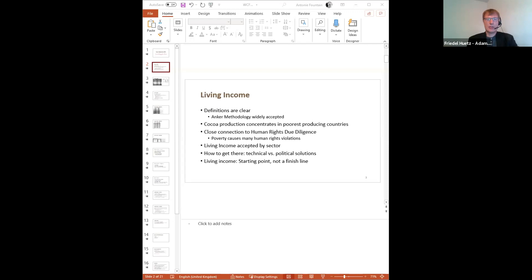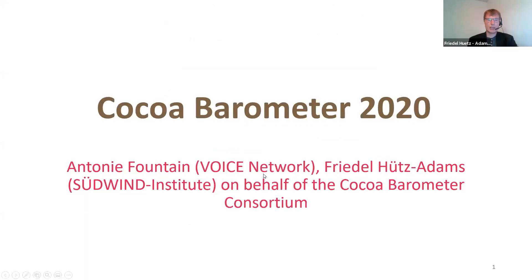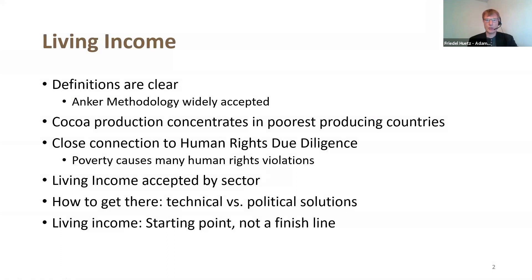What we did for the first time is we tried to benchmark cocoa production increases versus in which country they take place and what that means in terms of poverty. There is a close connection between living income and human rights due diligence, because poverty is one of the causes of many human rights violations, including child labor. We acknowledge that the link between living income and human rights violations is widely accepted in the cocoa sector, but what is not so clear is how to get there. There are technical solutions, political solutions, and a mix of both, and we are far from defining clear responsibilities.